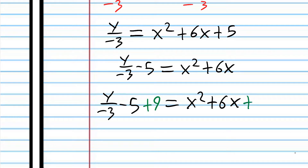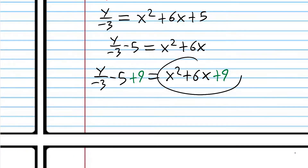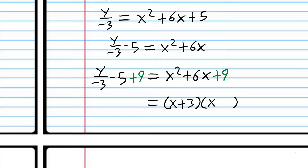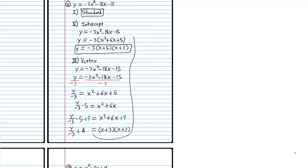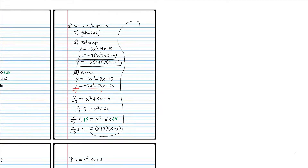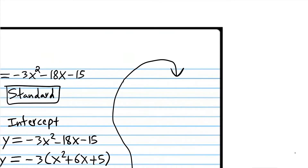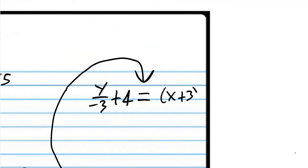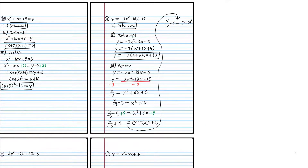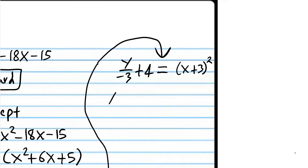So we add 9 to both sides. Over here, we have a perfect square. What two numbers multiply to 9 and add up to 6? That's obviously 3 and 3. Combining negative 5 and 9, we get positive 4. We're out of room, so we go up here: y over negative 3 plus 4 equals x plus 3 to the second power. Now we change that to power notation.